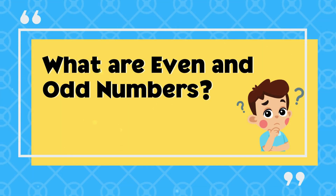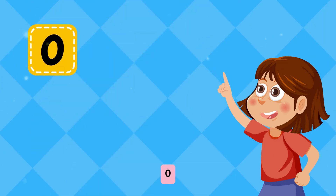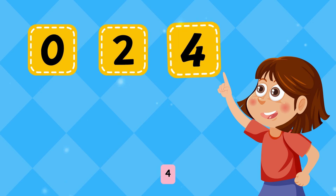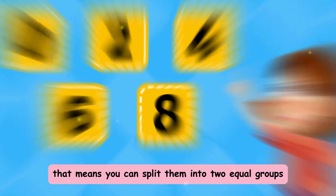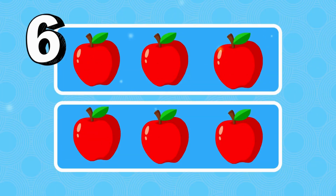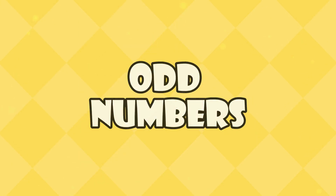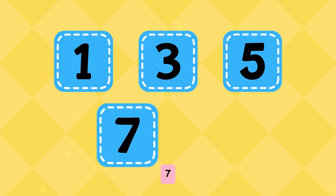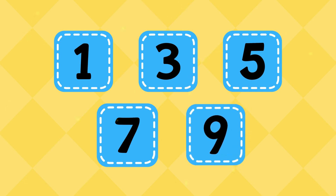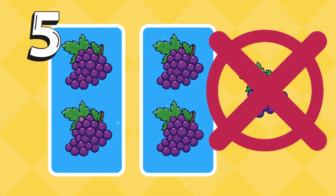Even numbers always end in zero, two, four, six, or eight. That means you can split them into two equal groups. Odd numbers always end in one, three, five, seven, or nine — and guess what? They don't split evenly; one number is always left out.